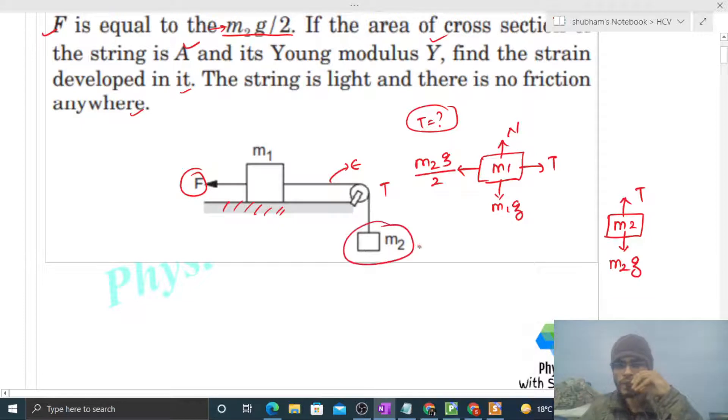If m2 has acceleration a in the downward direction, then m1 will have acceleration a in the forward direction, from the constraint relation. So m1 has a forward and m2 has a downward acceleration.